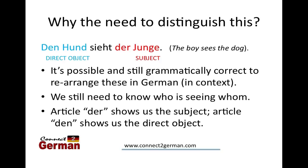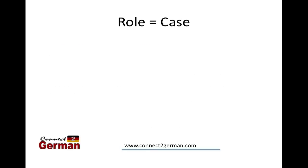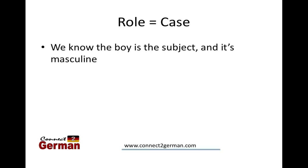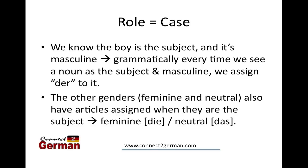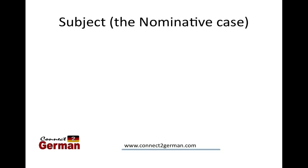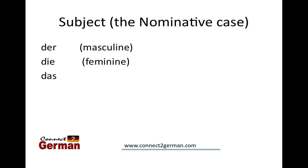The article der applies to the subject and the article den applies to the direct object. A case is essentially talking about the role of a certain word - specifically nouns. We know the boy is the subject and it's masculine, so every time we have a noun that is both the subject and masculine, we assign der to it. Feminine nouns get die and neutral nouns get das. Here's a chart: der is masculine, die is feminine, das is neutral.